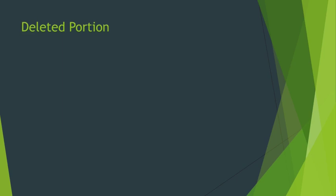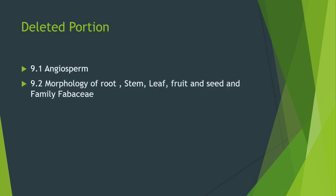First, I will let you know about the deleted portions for your final exam's 11th standard from this chapter. Section 9.1, Angiosperm Introduction, is deleted. Section 9.2, Morphology of Fruit, Stem, Leaf, Fruit, Seed, and Family Fabaceae has been deleted. Though this portion is deleted, I will be teaching you the entire chapter because it is very important — 10 questions, that is 40 marks weightage for your NEET exams and equal importance for your CET exams. Also, a few practicals are based on this chapter, so we will be studying the entire chapter in detail.